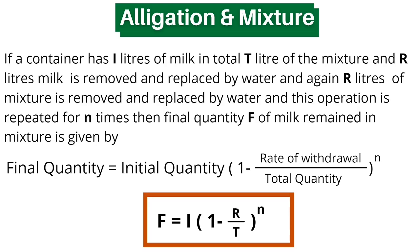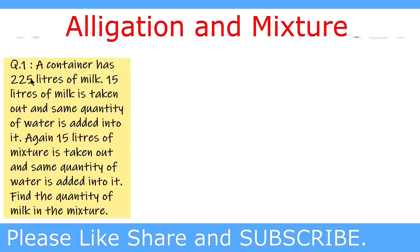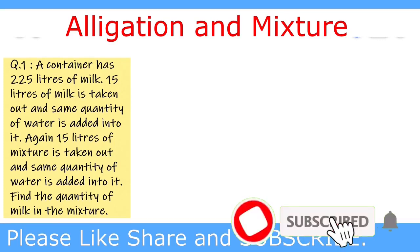We will solve questions by both the conventional method and the formula method, and also show questions where the formula cannot be used. Our first question: a container has 225 liters of milk; 15 liters of milk is taken out and the same quantity of water is added. Again, 15 liters of mixture is taken out and the same quantity of water is added. Find the quantity of milk in the mixture. We will solve this first by the conventional method and then by the formula method.